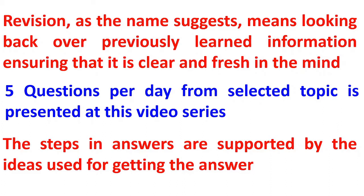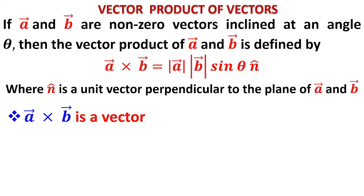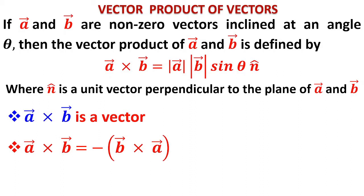Vector Product: If vector a and vector b are nonzero vectors inclined at an angle theta, then the vector product is defined as a × b = |a||b| sinθ n̂, where n̂ is a unit vector perpendicular to the plane of a and b. Key results: a × b is a vector; a × b = −(b × a); and a × a = 0, because the angle between them is zero and sin(0) = 0.